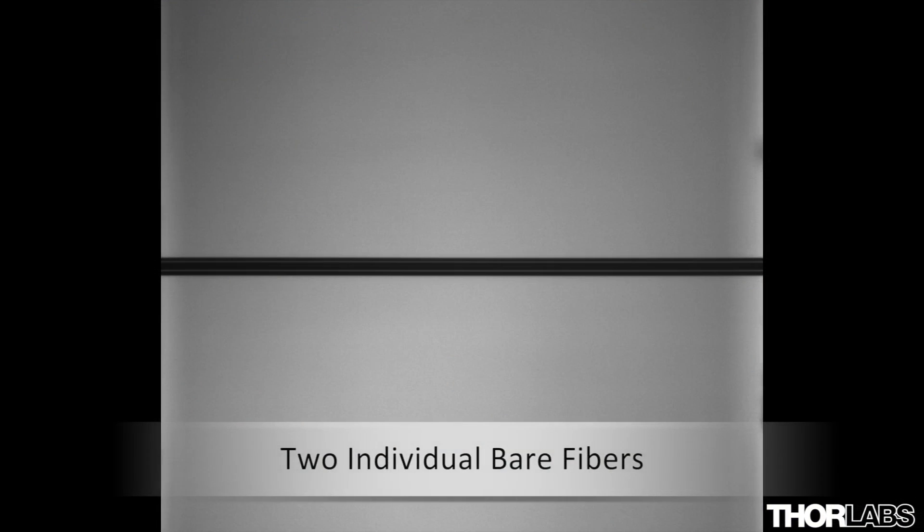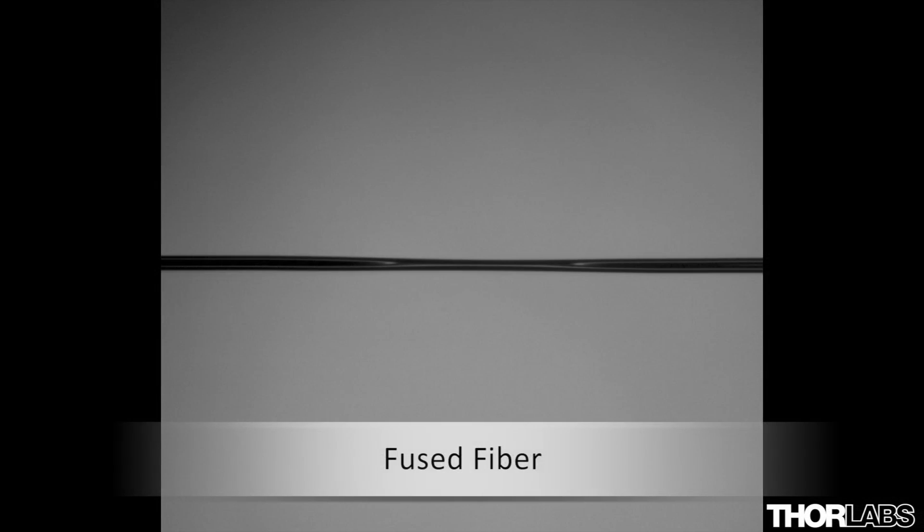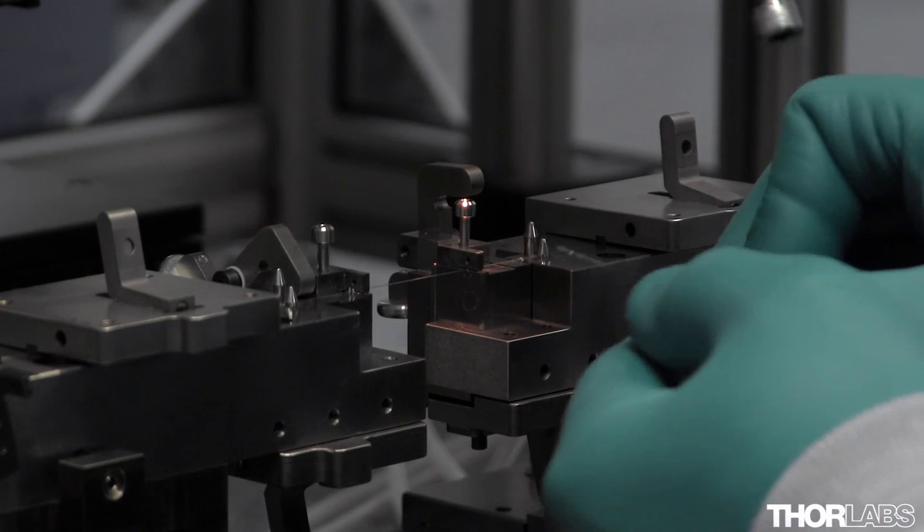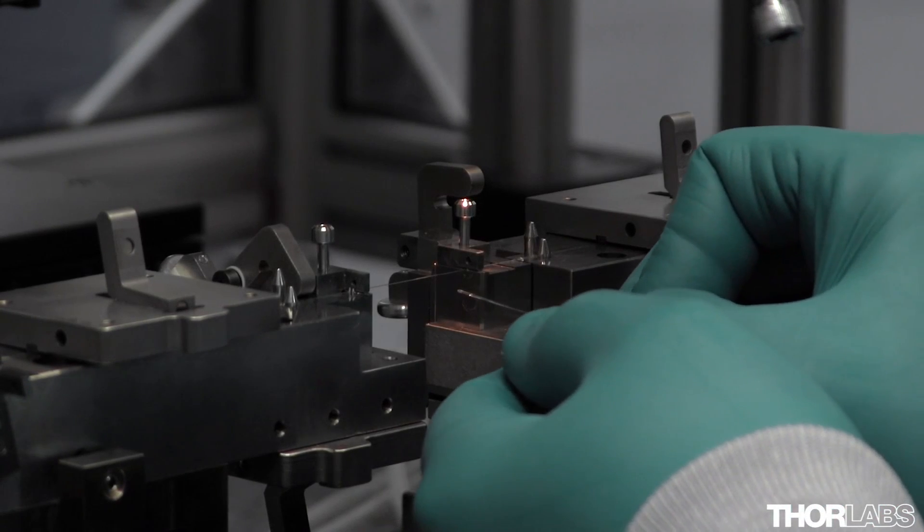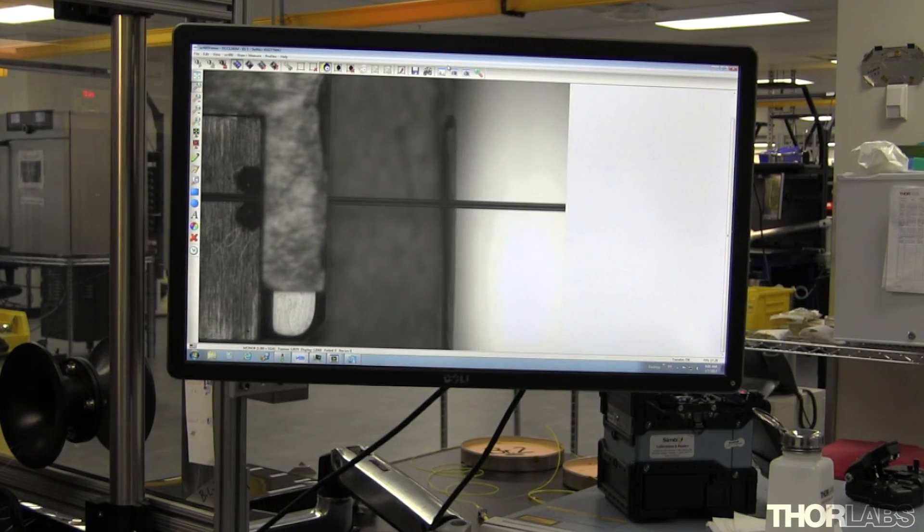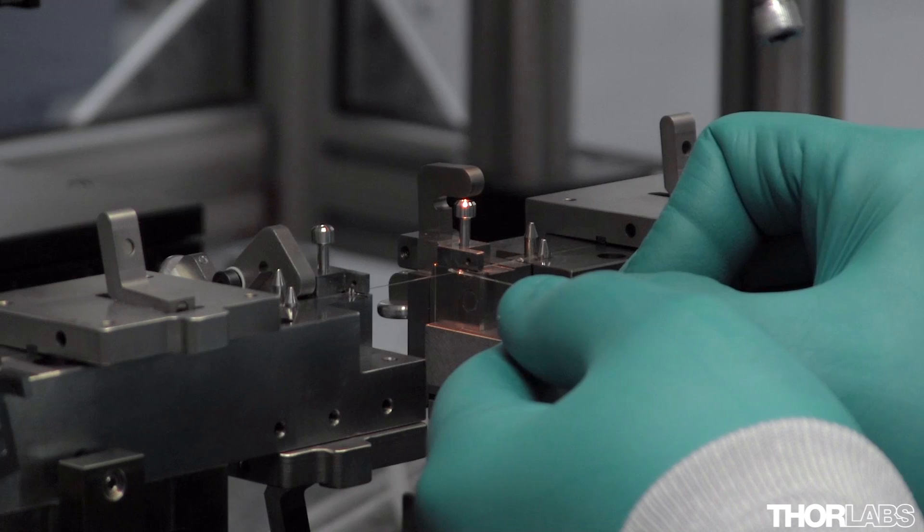The fibers are then heated and fused together to the appropriate length, thereby determining coupling ratios or wavelength channel spacing. This flexible process allows us to achieve our standard coupling ratios and channel spacing, as well as any custom ratio or channel spacing upon request.